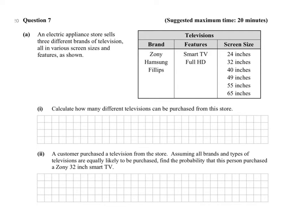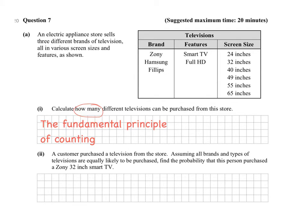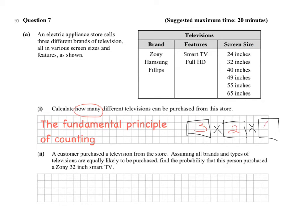Whenever you see the words 'how many,' always think of the Fundamental Principle of Counting. It means rather than listing them all out or doing a tree diagram or two/three-way table, you figure out how many options there are by thinking: how many choices do I have for the first, the second, the third? Using the word 'and' means we multiply.